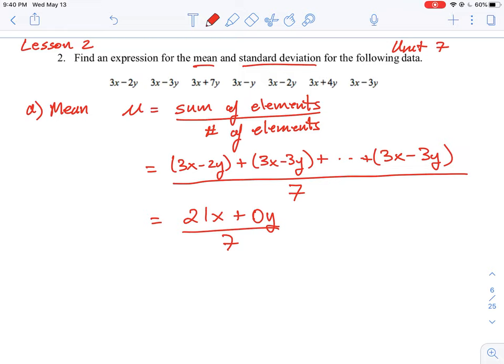Divided by 7, the 0y term will just go away. So this is simply going to be 21x over 7, or 3x. So the entire average of that set of algebraic expressions just turns out to be 3 times the number of x. The value of y doesn't even enter into it.